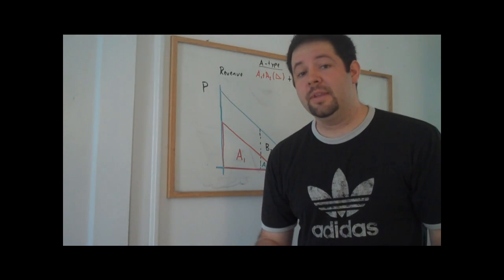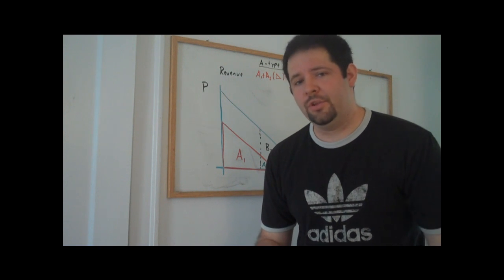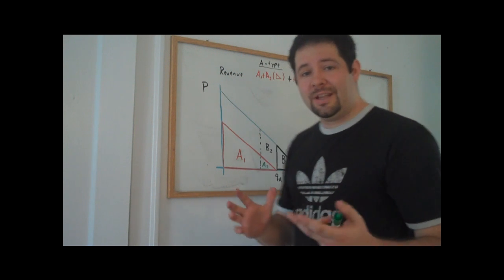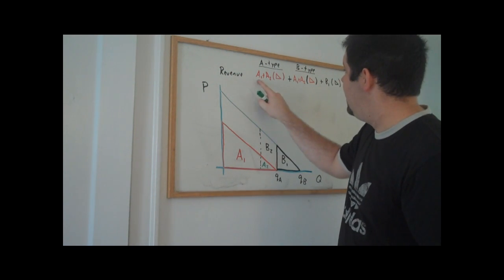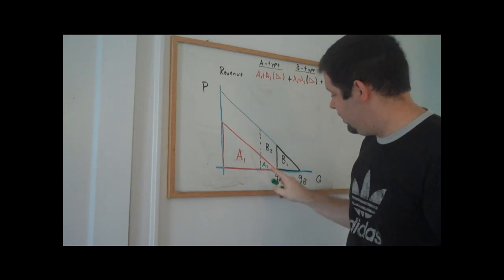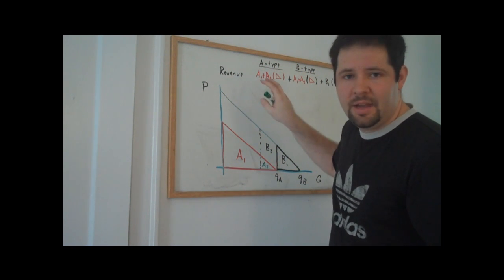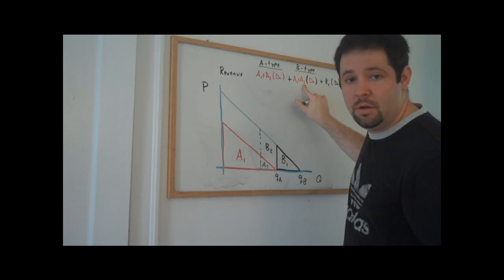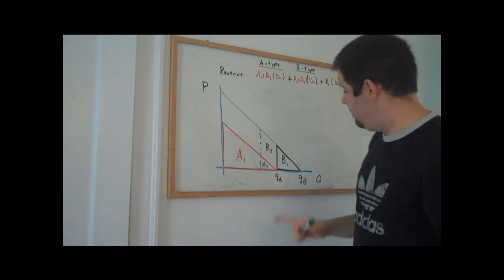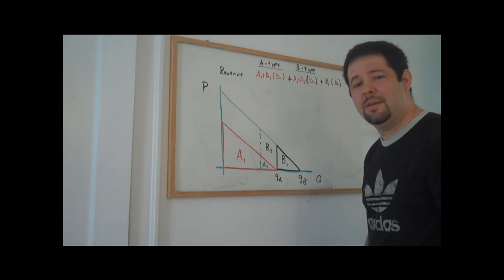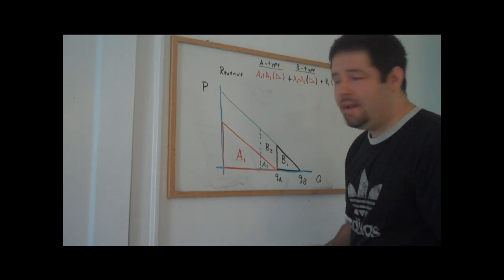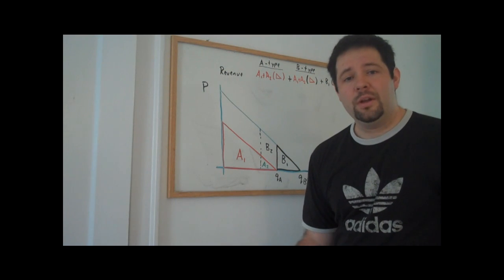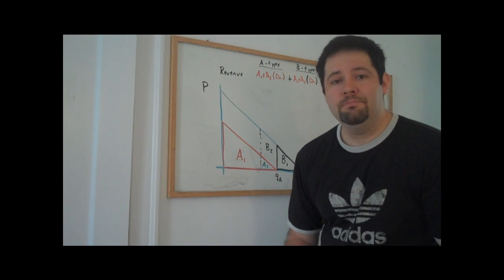Let's consider a slight relabeling of the intuition we just described for second-degree price discrimination. As a first pass, the monopolist is able to charge A1 plus A2 from type A individuals. From type B individuals, it charges A1 plus A2, but then only a premium of B1, because that's all the monopolist is able to extract. In total, we get two A1s, two A2s, and a B1. A natural question to ask is: can the monopolist do better?